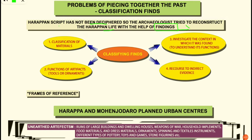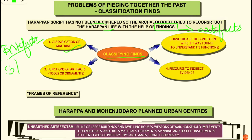Findings here refer to artifacts which have been recovered. Artifacts can be anything which has been found — for example, pottery, tools, ornaments, or ruins of buildings. The first classification is on the basis of materials, which means whenever archaeologists find any artifact, they will try to understand what the artifact is made of — whether it is made of stone, clay, bone, or ivory.